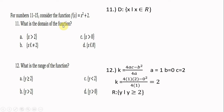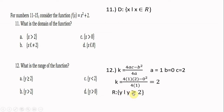For numbers 11 to 15, consider f(x) = x² + 2. The domain is the set of real numbers. To find the range: the graph of x² shifts two units up, opening upward. Using k = (4ac − b²)/4a with a = 1, b = 0, c = 2, the answer is 2. So the range is {y | y ≥ 2}.